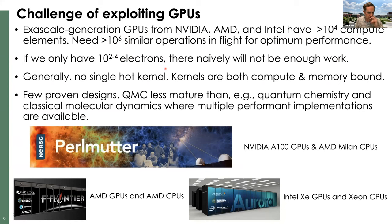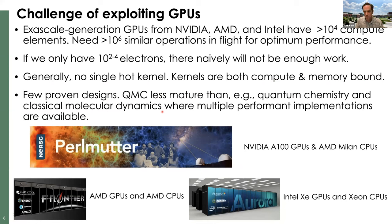Additionally, we don't have a single hot kernel in the calculations — except perhaps for the very largest. We have a few that are compute-bound but the majority are more memory-bound. Adding to our homework as co-developers is that quantum Monte Carlo techniques are much less mature than, say, quantum chemistry and classical molecular dynamics. There are simply fewer proven designs, with only one full production QMC code having a full GPU implementation.